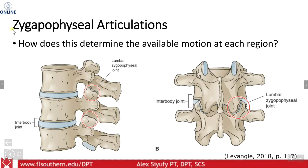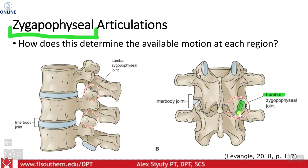Continuing to talk about the facet joint or Z joints, there is definitely a relationship between the shape of these joints and the motion involved. If you look at the lumbar spine, you can see because these joints are aligned this way, it allows for flexion and extension to occur. But because of their orientation, which is relatively vertical, if this joint tries to rotate to the right or to the left, it is essentially blocked from that rotation.